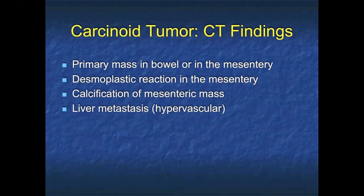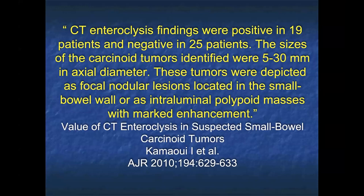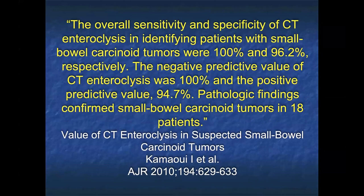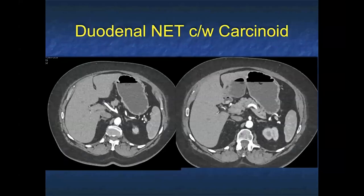When looking at suspected carcinoid tumors, look very carefully because they're often multiple. Also look carefully in the mesentery for a mesenteric mass, and look at the liver. Metastases from carcinoid tumors, like most neuroendocrine tumors, are best seen in arterial phase imaging and can easily become isodense. Although carcinoids can be small, one article by Kamui noted that for lesions 5 to 30 millimeters, sensitivity was 100%, specificity 96%, and negative predictive value 100%.